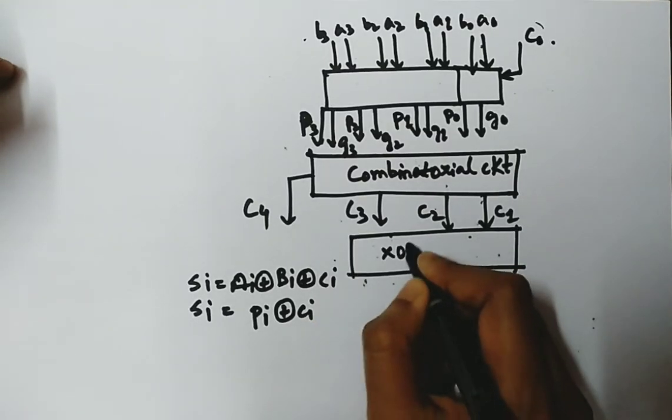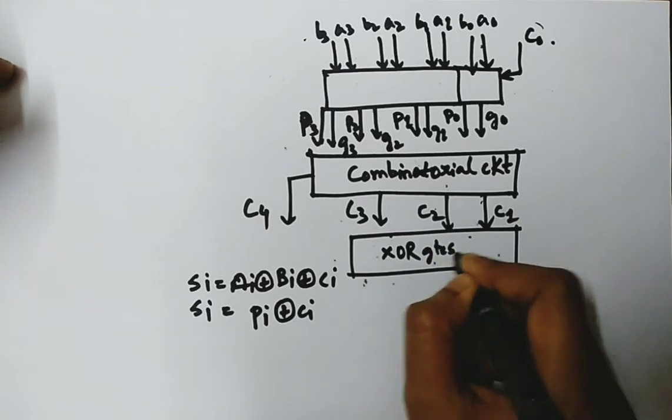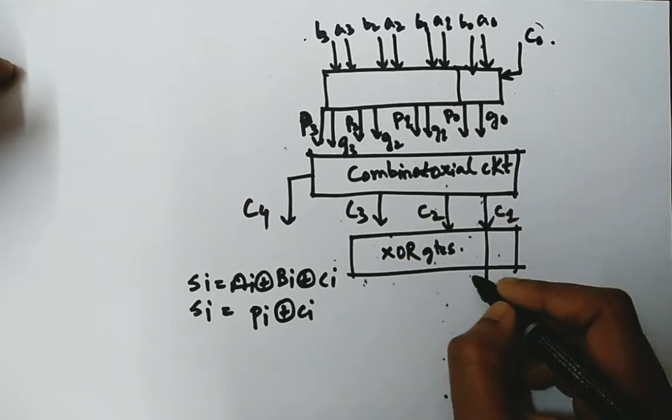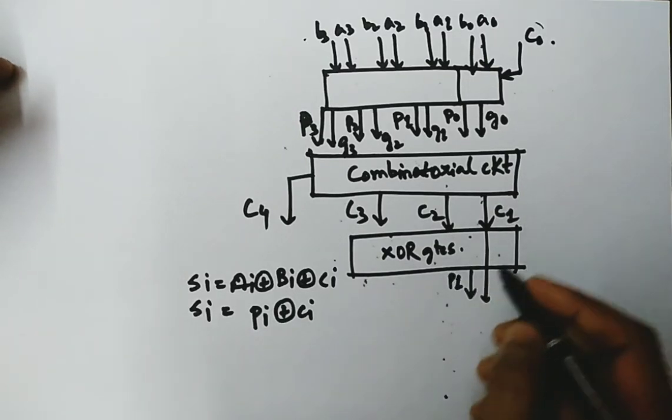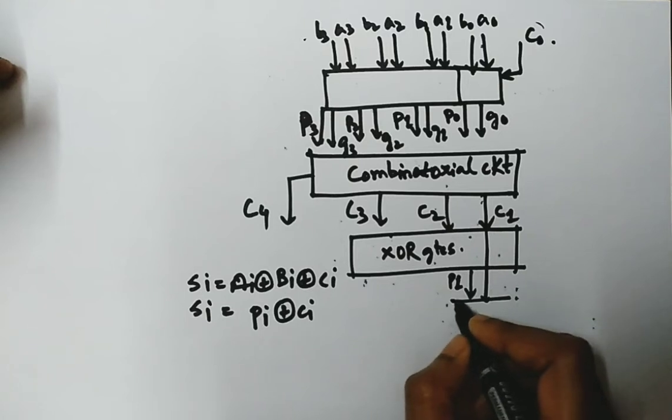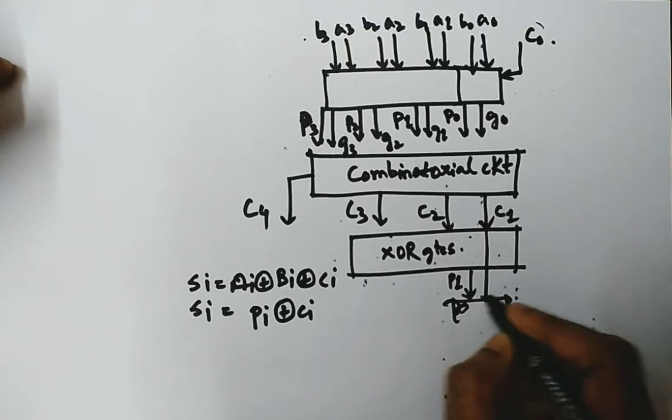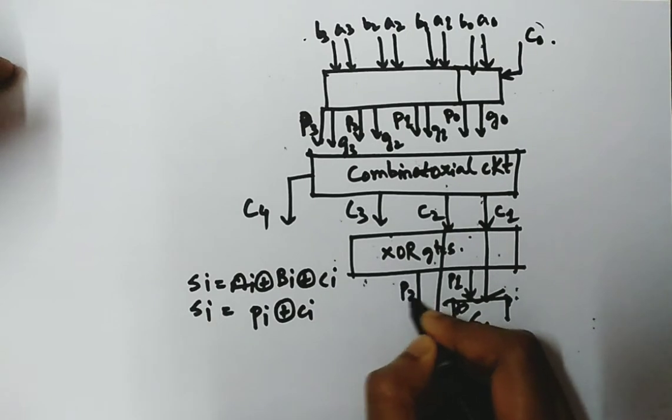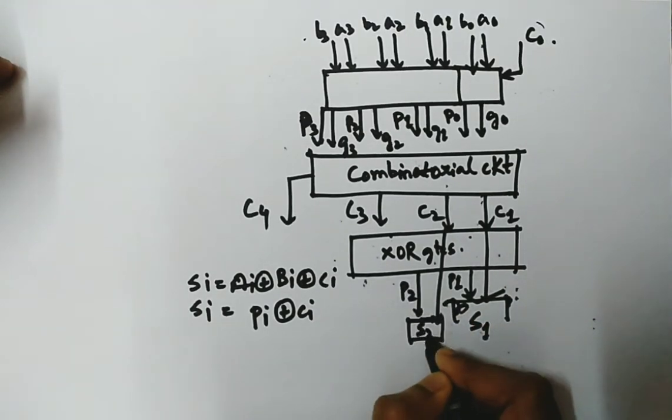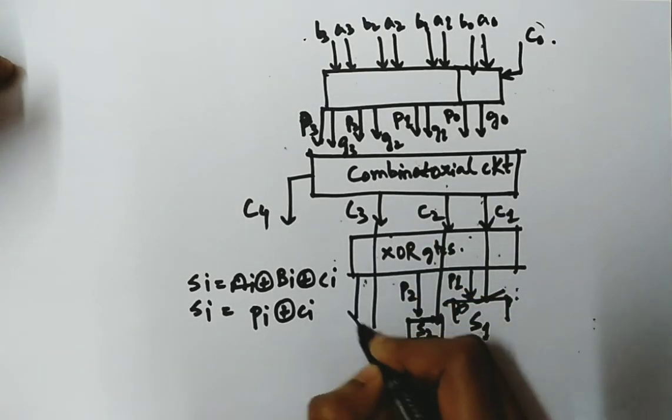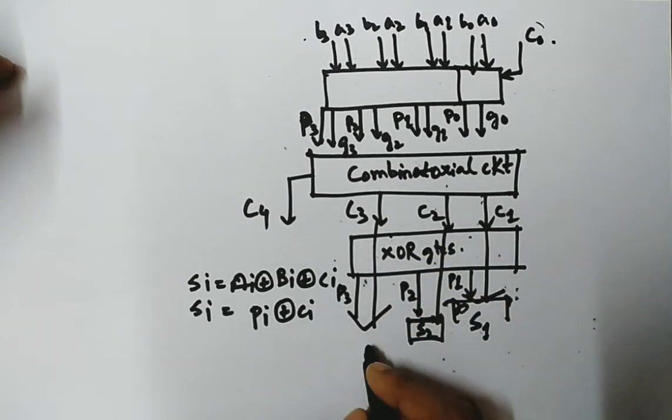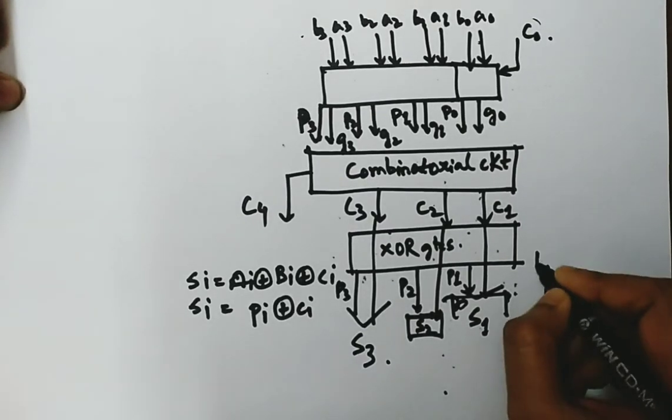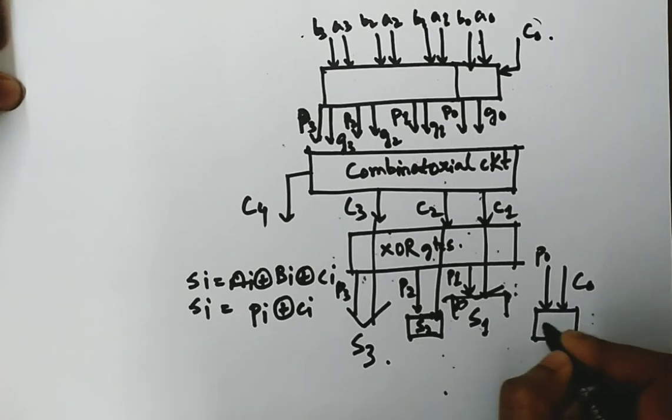So if we give XOR gate circuits here, by XORing Ci with Pi which we already know, C1 with P1, we get S1. Then from C2 and P2 we get S2. Then from C3 and P3 we get S3, and from C0 and P0 we get S0.